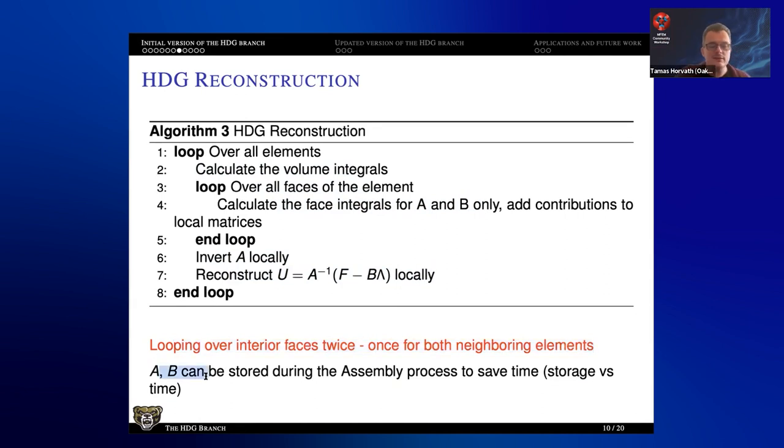To make it a little bit less painful to wait for the assembly to finish in the initial version of the HDG branch, I had a possibility to store A and B on some elements or on all elements during the assembly process. And during the reconstruction, you don't need to recalculate them. You can just load them and get the reconstruction without calculating integrals.